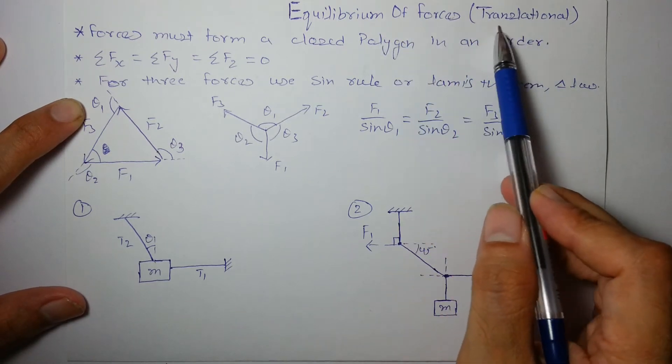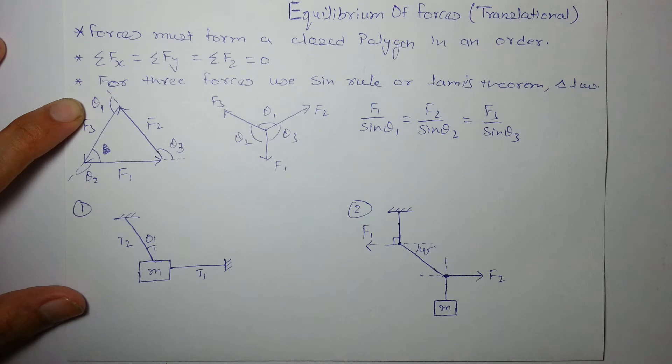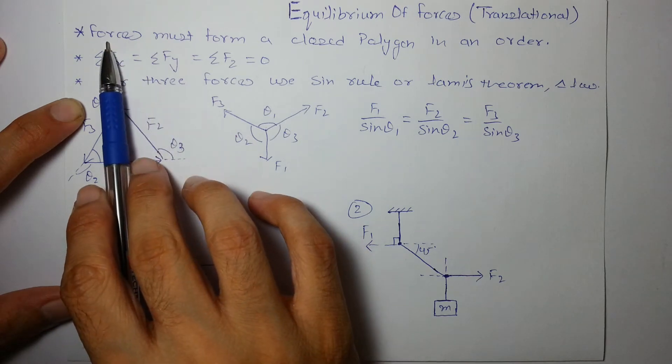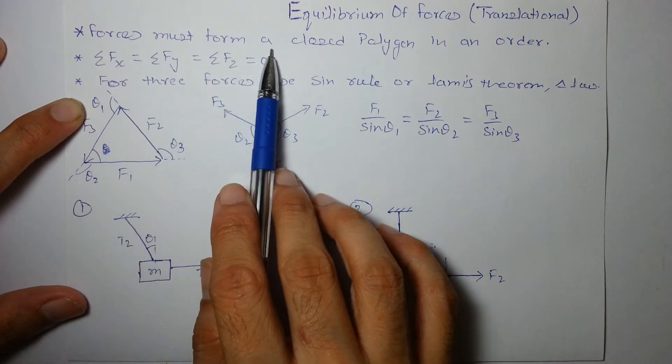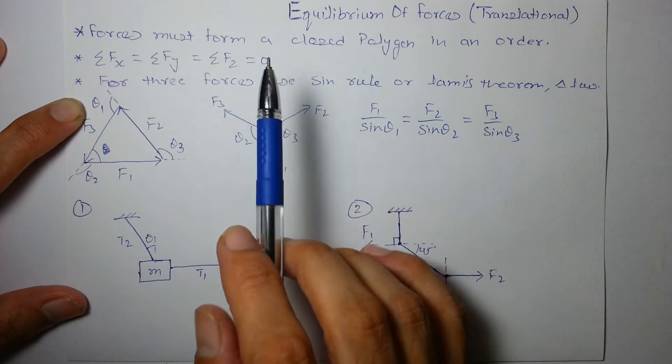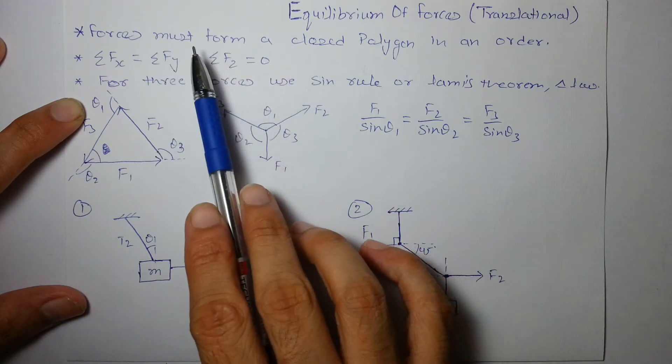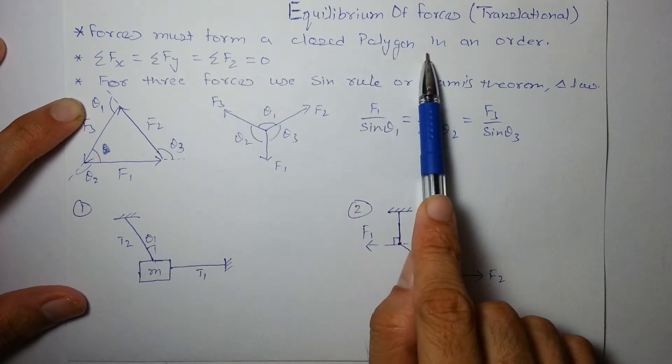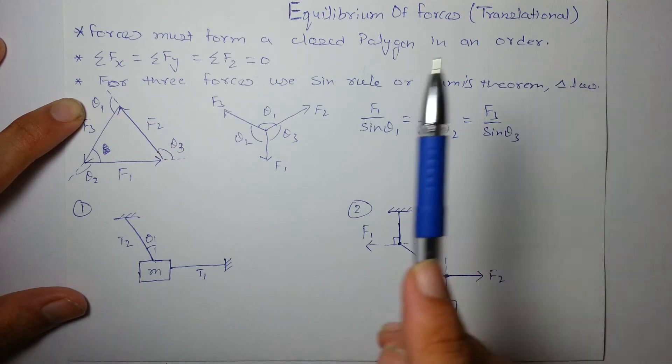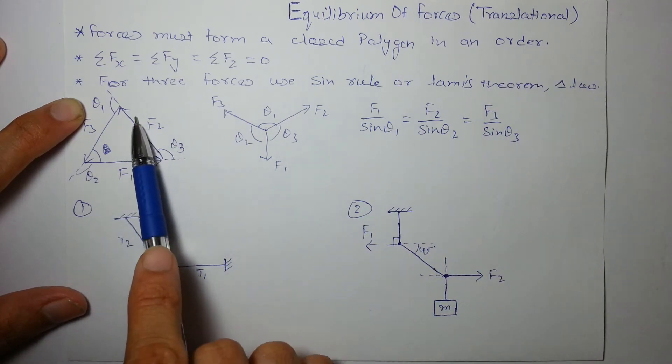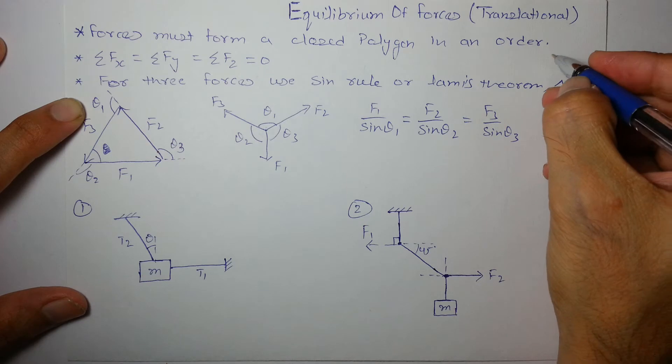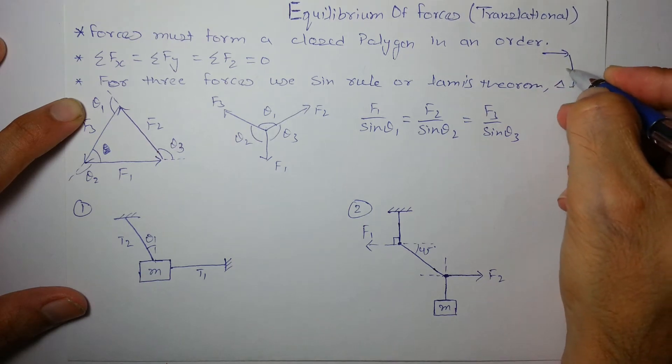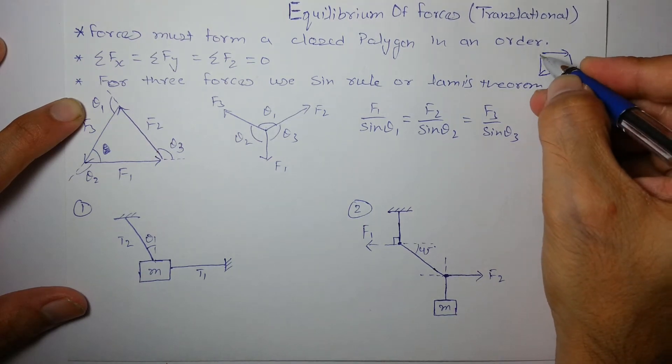So, equilibrium of forces, translational cases only. Force must form, if an object is in equilibrium, the forces acting on it must form a closed polygon in an order. Like this, this, this, this or I can draw one more. Let's say this, this, this and this.